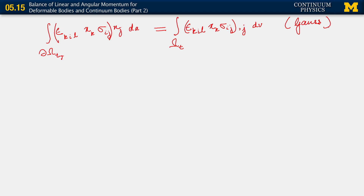By the divergence theorem, this is now an integral over omega sub t of epsilon k i l, x k sigma i j. The divergence involves a derivative — this is comma j — corresponding to the j index on nj. This is Gauss's divergence theorem applied. But now we can just compute that gradient. Observe that the permutation symbol is a constant — it's just a set of numbers — so nothing happens to the permutation symbol. We get epsilon k i l, and then we apply the product rule. The derivative of x k with respect to x j gives us the Kronecker delta, so we get delta k j sigma i j.